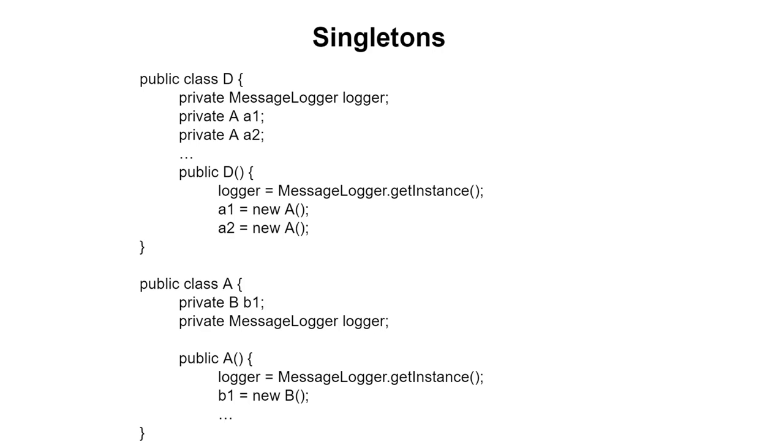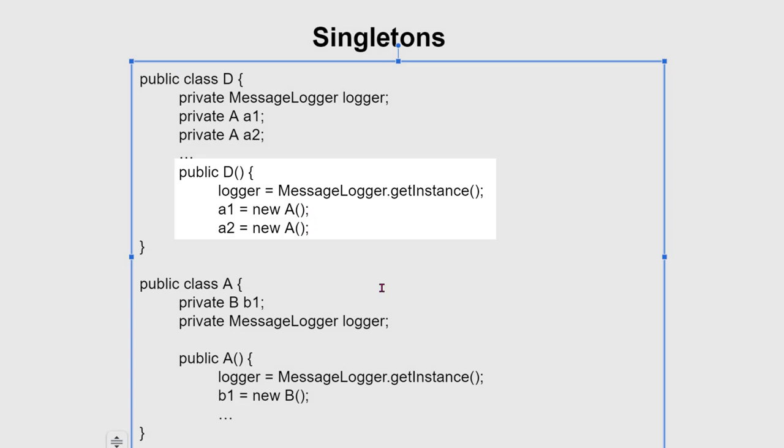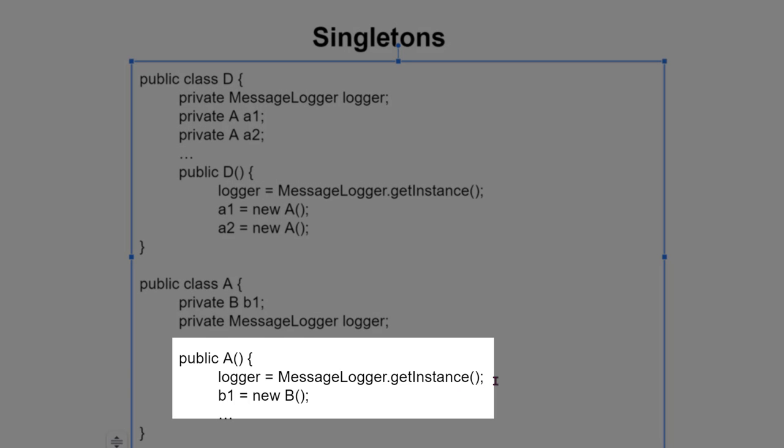Here you can see the D object is getting access to the logger by calling the getInstance method of the message logger class. Notice that it does not have to pass this information to its children—the constructors of the A classes no longer need this information. Likewise, in the A class, the objects can get access to the logger simply by asking the message logger class for access to it right here.